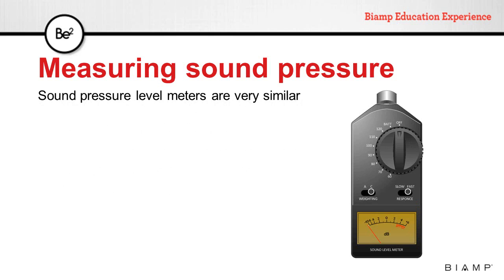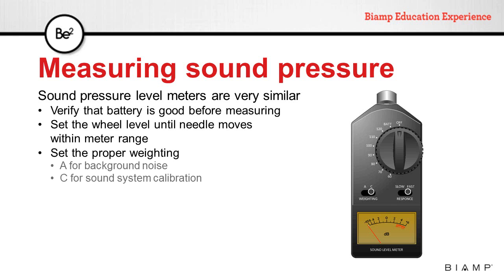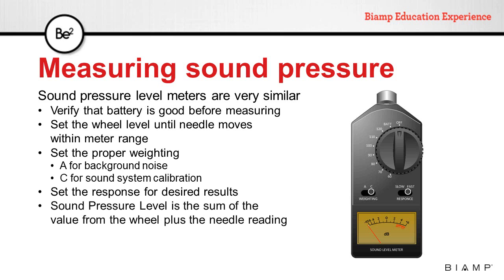Most sound pressure level meters are very similar. To properly measure sound pressure level, we need to follow some simple steps. First, verify that the battery is in good condition. Then, set the wheel level until the needle moves within the meter range, so we are measuring the correct range. Set the proper weighting — A for background noise measurements or C for sound system calibration — and then set the response for the desired results. The sound pressure level reading will be the sum of the value of the wheel plus the needle reading.